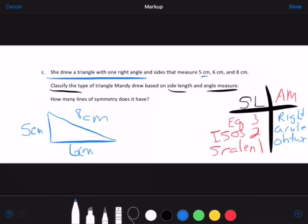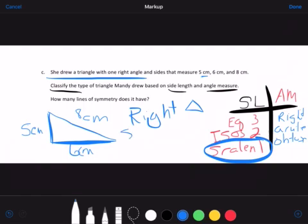So it says classify the type. Well, it's a right triangle. And then the side length ones, well, if this is five, six, and eight, none of them are equal. So that would make it scalene. And then how many lines of symmetry does it have? None. Since none of the sides are the same length, none of the sides can fold over onto themselves or onto the other side, because one would always be longer than the other.